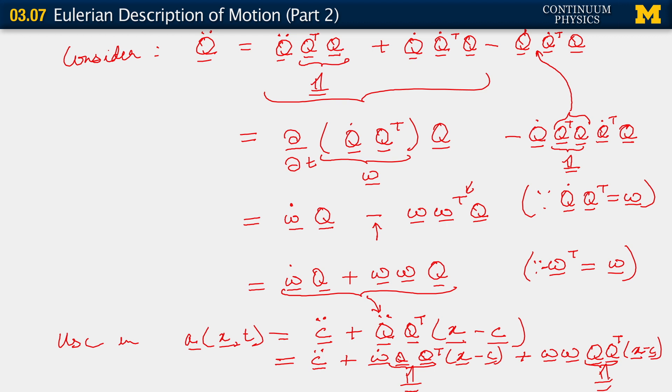And observe here that Q Q transpose is the second order isotropic tensor there as well as there. So putting all of this together, we are going to see that the Eulerian velocity can be written as c double dot plus omega dot x minus c plus omega omega x minus c.